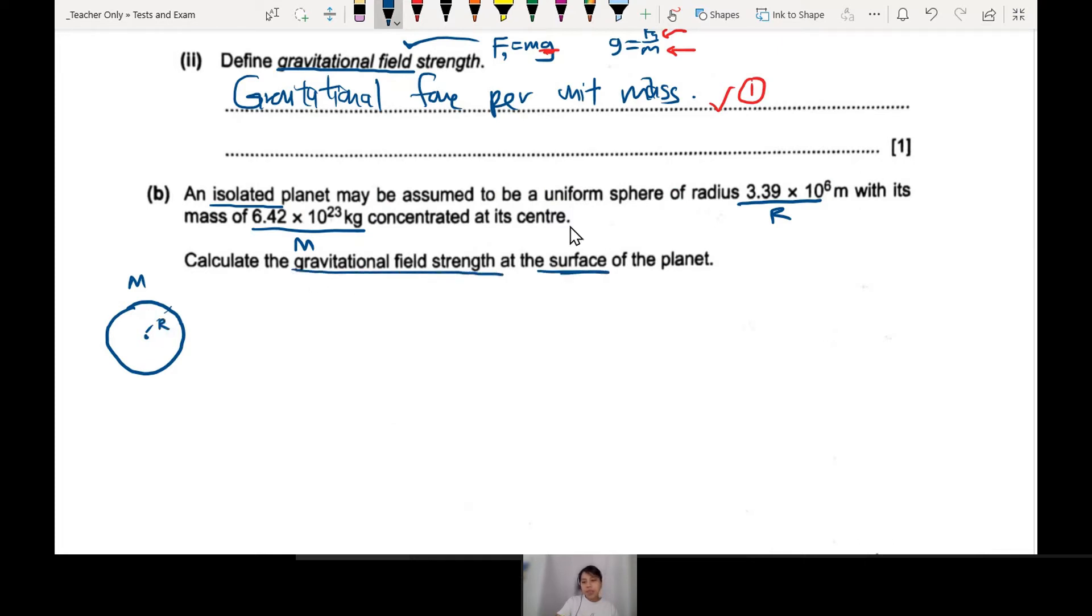You need to remember how to find gravitational field strength: g equals GM over r squared. Remember this one - GM over r squared is gravitational field strength. This one already one mark if you manage to recall or write down or use this equation somewhere in your working. We need to plug in everything we know. G is a constant, 6.67 times 10^-11 that you can find on the first page of every past year. Mass of planet, they give to us 6.42 times 10^23 kg.